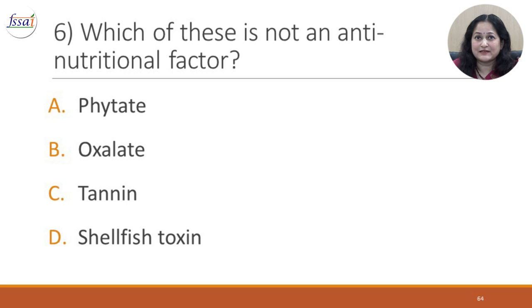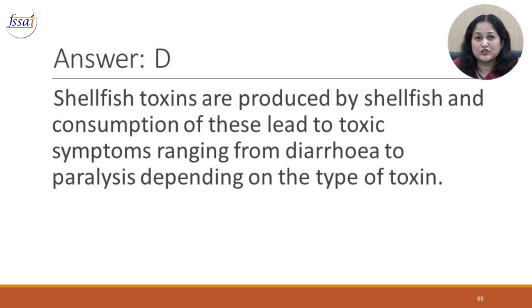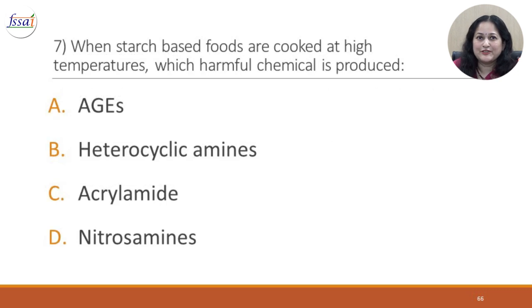Question 6: Which of these is not an anti-nutritional factor? A. Phytate, B. Oxalate, C. Tannin, D. Shellfish toxin. The correct answer is D. Shellfish toxins are produced by shellfish and consumption of these leads to toxic symptoms ranging from diarrhea to paralysis depending on the type of toxin.